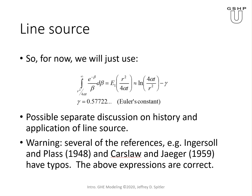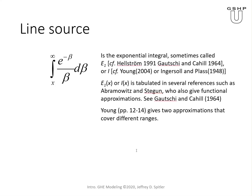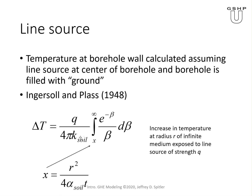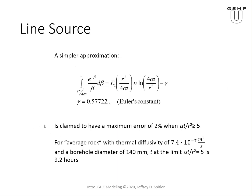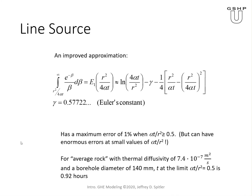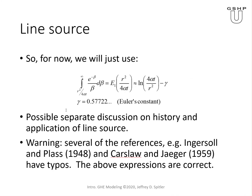For now, we're going to use the simplest approximation shown here. I'll also warn you that several references have typos — for example, Karslau and Jaeger have the diffusivity where there should be conductivity, and Ingersoll and Plass have something like a 2 inside a square root where it should be outside. So what you see here is correct.